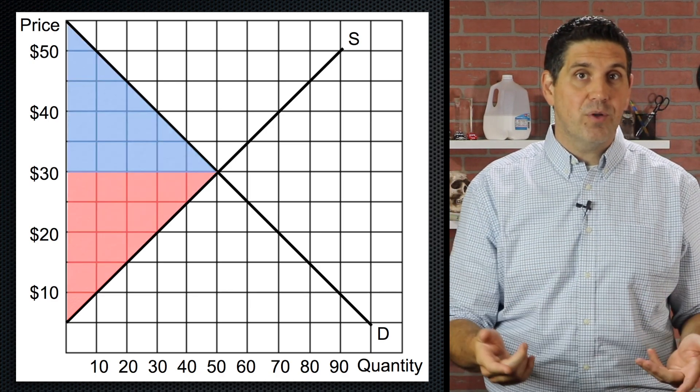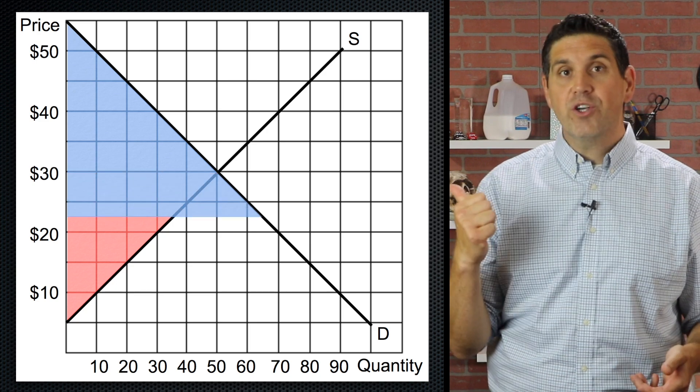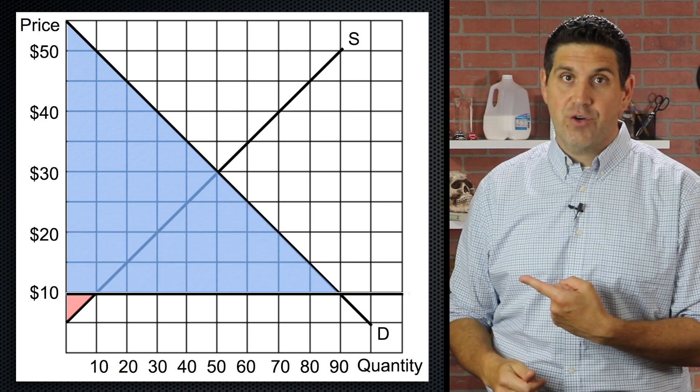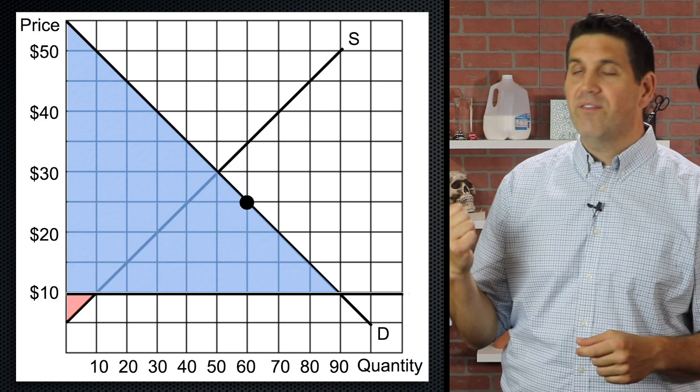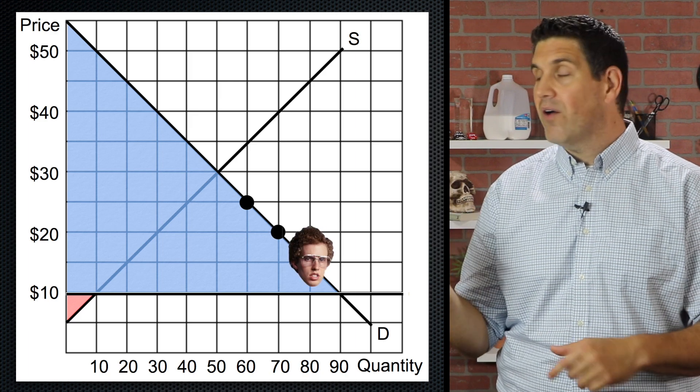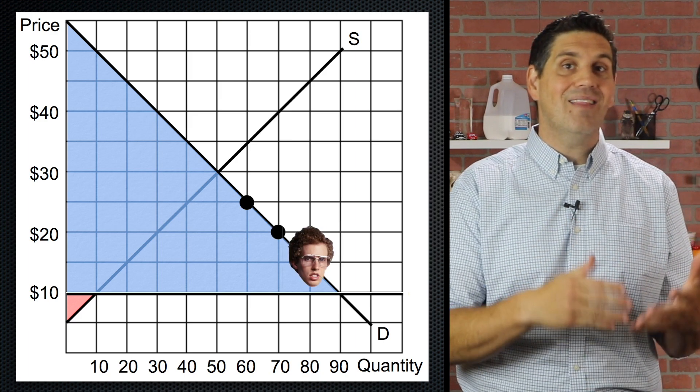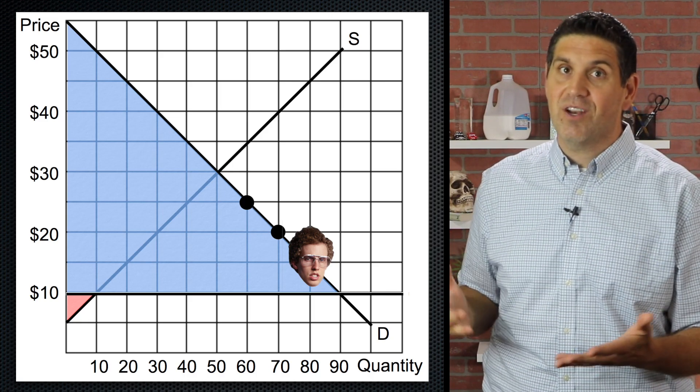Total surplus, the consumer and the producer surplus, was this before trade. And now it's this after trade. All the people that are willing to pay $25 or $20 or $15 before trade didn't get the speakers. But now with trade, they can get the speakers.